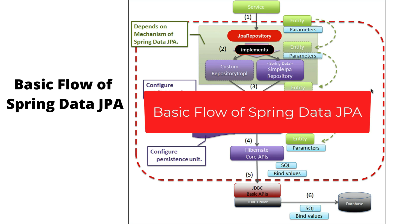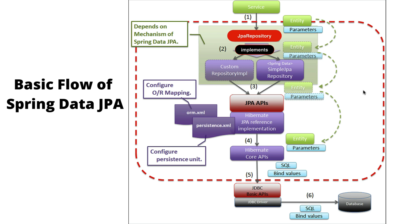Welcome back. In this lecture, let's quickly understand the basic flow of Spring Data JPA. This diagram shows the basic flow at the time of accessing data from the database table using Spring Data JPA. If you look at the steps here — one, two, three, four, five, six — whenever we perform any database operation using Spring Data JPA, these six steps will be performed internally.